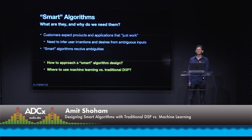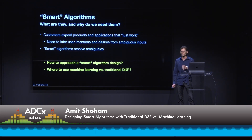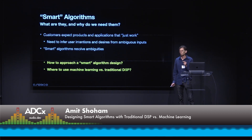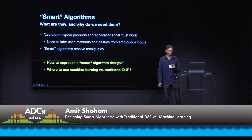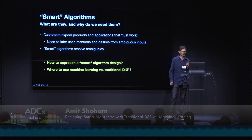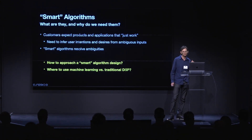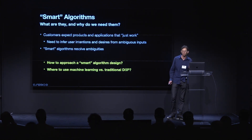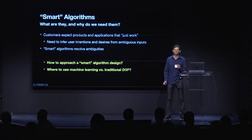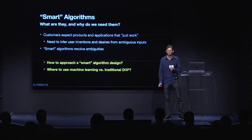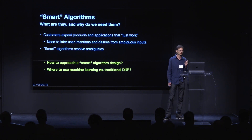Machine learning has given us a wonderful set of tools for creating new smart algorithms that we never were able to create before. Often though, I also see developers turning to models that are large and hard to deploy when that's not necessarily the best solution. In this talk, I hope to give you some basic principles and guidelines for figuring out how to approach a smart algorithm design, and where it makes sense to leverage machine learning versus more traditional DSP.